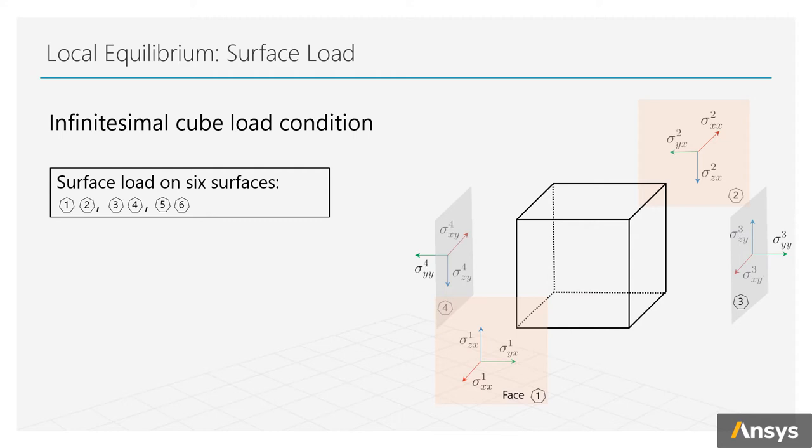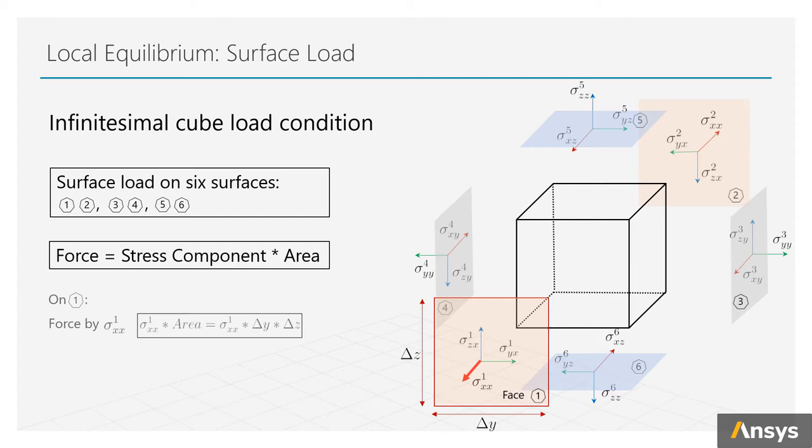For example, on face 1, force created by sigma xx is sigma xx times the area, and the area is dimension delta z times delta y. Or, for force created by sigma yx on surface 1, the force is simply sigma yx times delta y times delta z. Same thing for all the forces on the six surfaces. Basically, each surface has three forces.